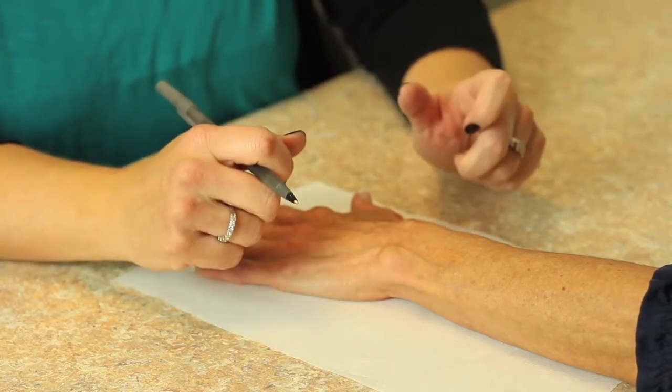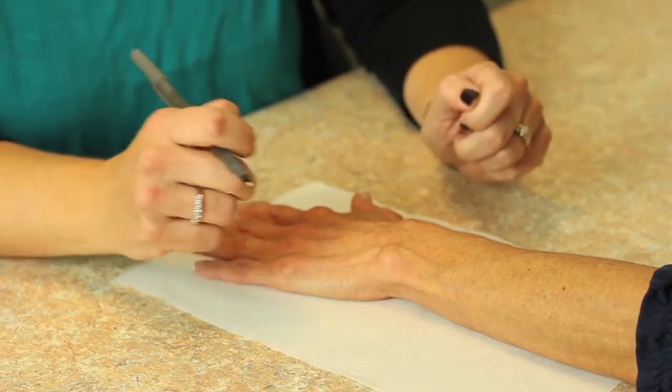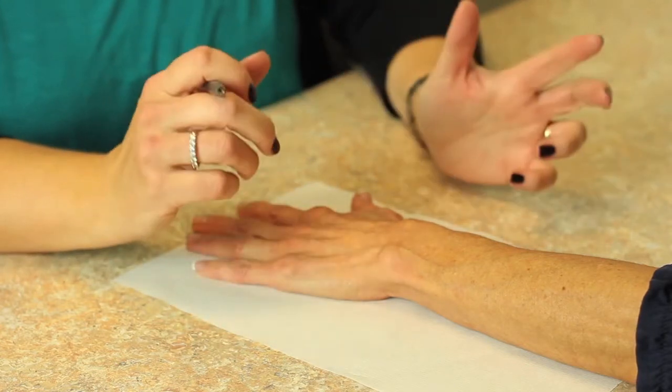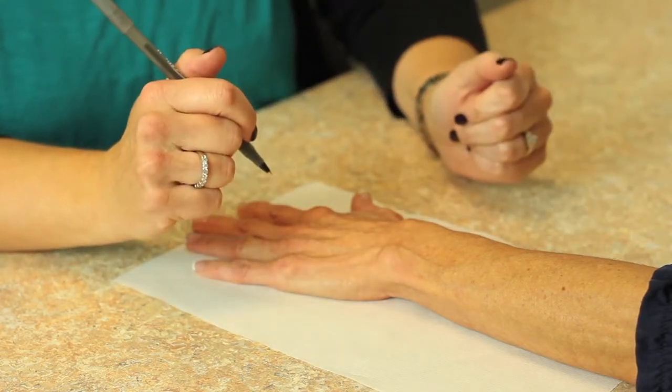In some cases you want to use the other side. If they've had an injury and they're not able to put their hand on the table like this, you can use their non-injured side to create the pattern.